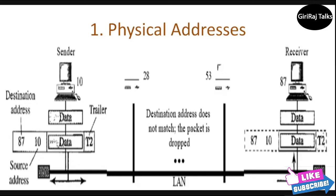We have shown a bus topology for an isolated LAN. In a bus topology, the frame is propagated in both directions — left and right. The frame propagated to the left dies when it reaches the end of the cable, if the cable end is terminated appropriately. The frame propagated to the right is sent to every station on the network. Each station with a physical address other than 87 drops the frame because the destination address in the frame does not match its own physical address. The intended destination computer, however, finds a match between the destination address in the frame and its own physical address. The frame is checked, and the header and trailer are dropped.